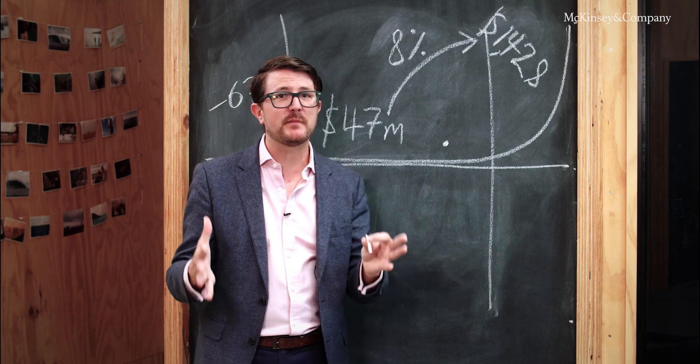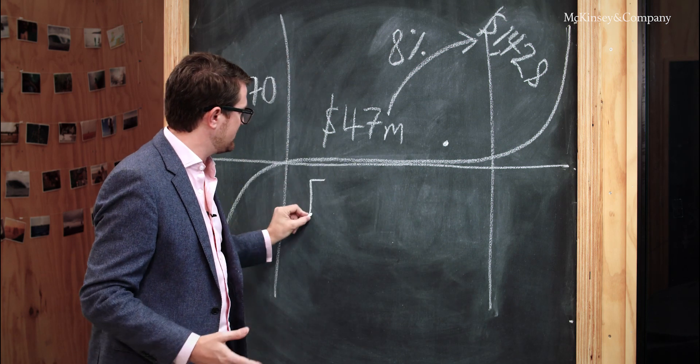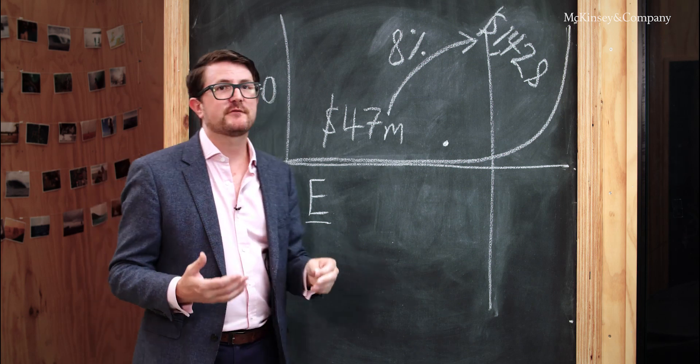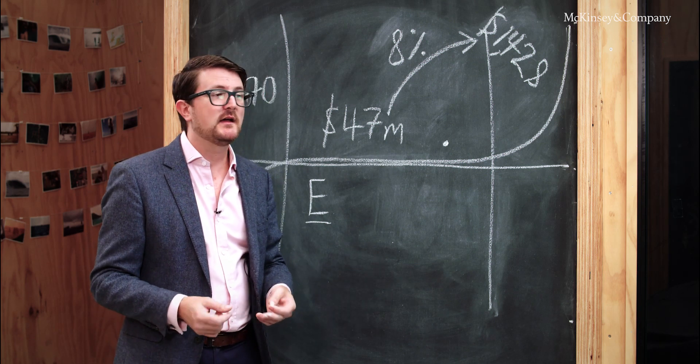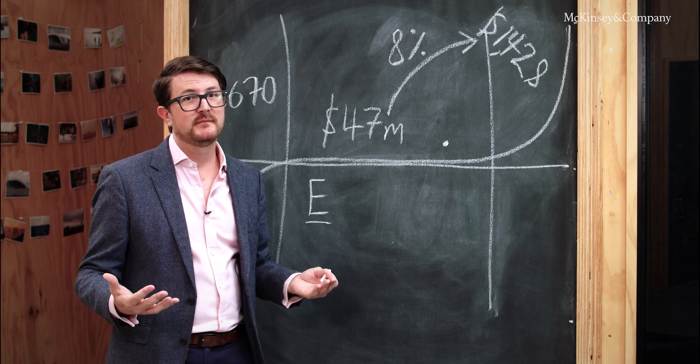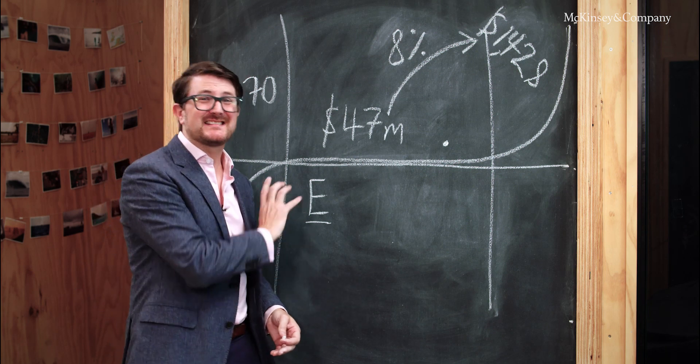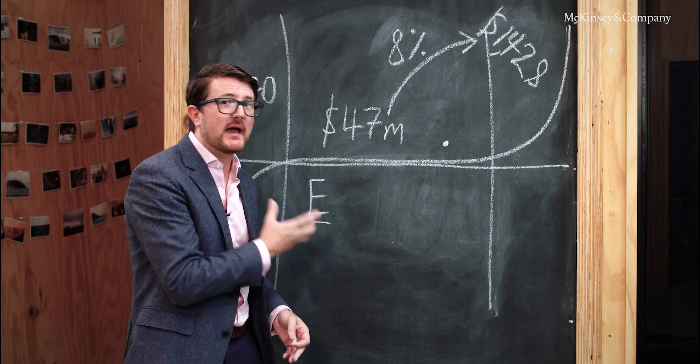It comes down to three big buckets of things. The first one is your endowment. Where did you start from? How big were you? How much R&D did you have in the bank and how much debt capacity did you have? Of course, these are things you're kind of stuck with. You can't change where you came from.